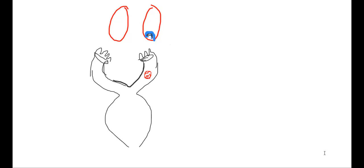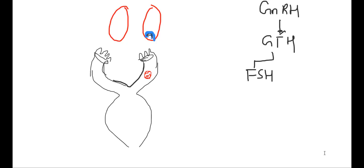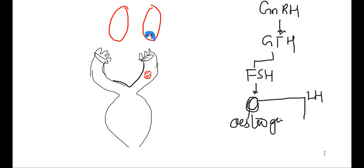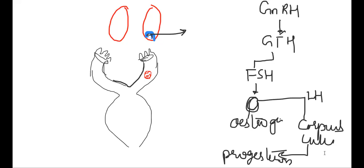To summarize so far: GnRH from hypothalamus stimulates anterior pituitary GTH, releasing FSH and LH. FSH matures the primary follicle into a Graafian follicle, which secretes estrogen. LH then causes ovulation. After ovulation, the remaining Graafian follicle becomes corpus luteum. LH also causes the corpus luteum to secrete progesterone.